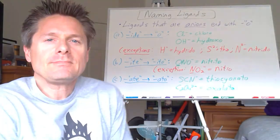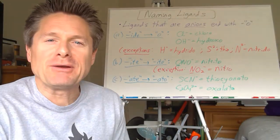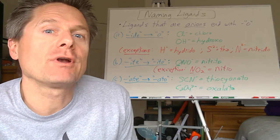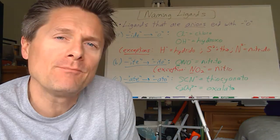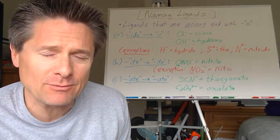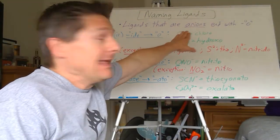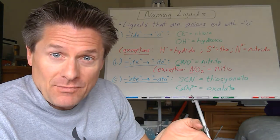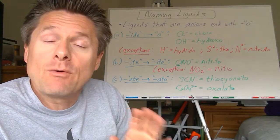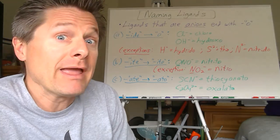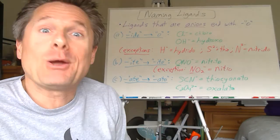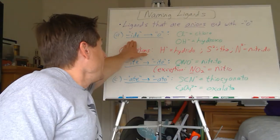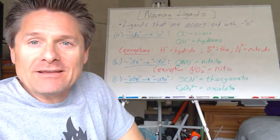And then we have to use the Latin roots — there's a lot of complex machinery here in naming coordination compounds. So, starting with the ligands: if the ligand is an anion — it's exceedingly rare to see a ligand as a cation — we'll see quite a few that are neutral. We're going to name neutral ones differently than anions. We're going to end anion ligand names with an O.